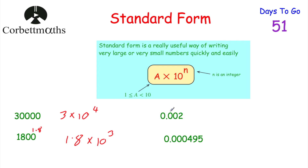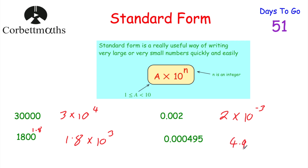Next: 0.002. This is a small number, so we choose 2, multiply by 10 with a negative power. Count the zeros: 1, 2, 3 — so it's 2 × 10⁻³. And finally 0.000495: that'll be 4.95 × 10 to the power of — count the zeros — 1, 2, 3, 4 — so it's 4.95 × 10⁻⁴.